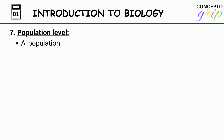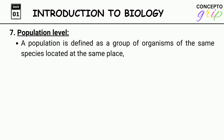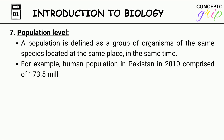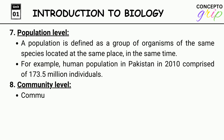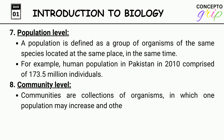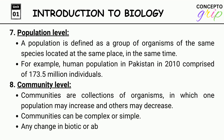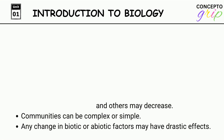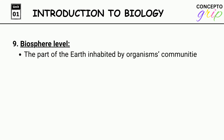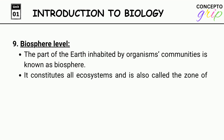Level 7 — Population level. A population is defined as a group of organisms of the same species located at the same place at the same time. For example, human population in Pakistan in 2010 comprised 173.5 million individuals. Level 8 — Community level. Communities are collections of organisms in which one population may increase and others may decrease. Communities can be complex or simple; any change in biotic or abiotic factors may have drastic effects. Level 9 — Biosphere level. The part of the earth inhabited by organisms' communities is known as the biosphere. It constitutes all ecosystems and is also called the zone of life on earth.